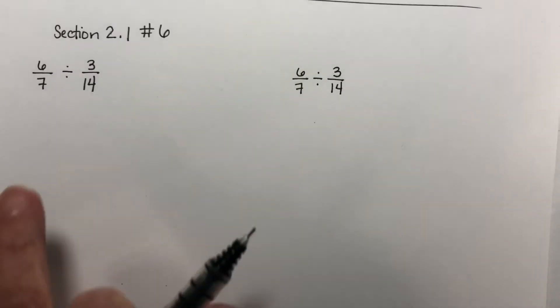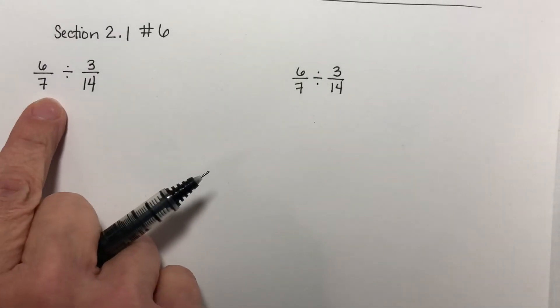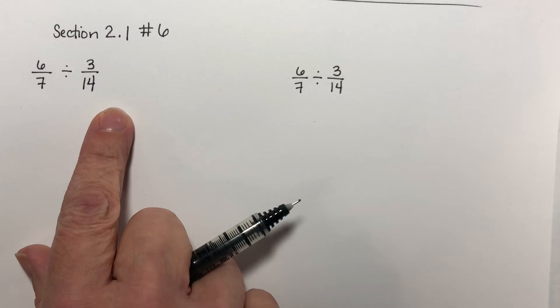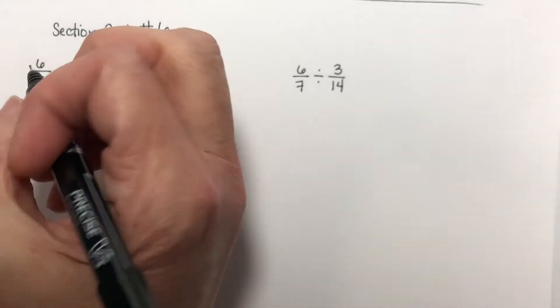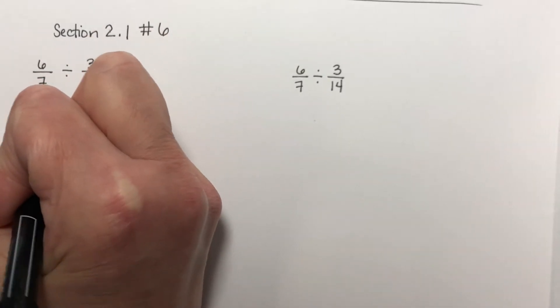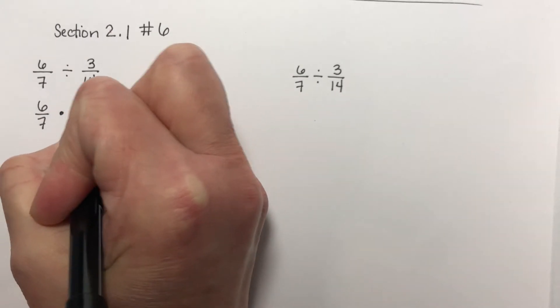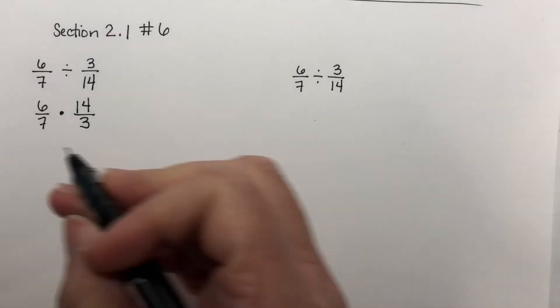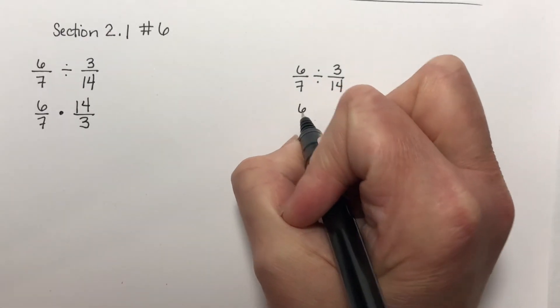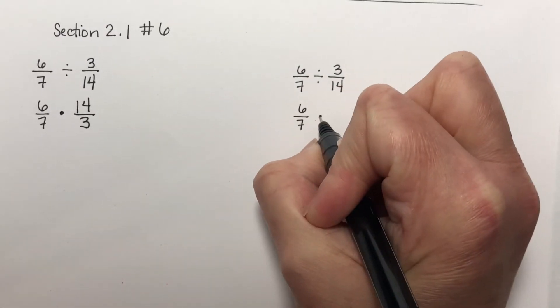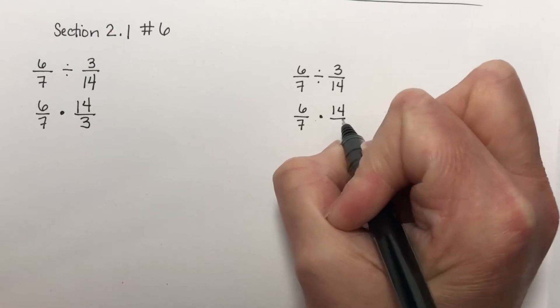The problem that it gave me is 6 over 7 divided by 3 over 14. Now the rule for dividing fractions is you keep the first one, change it to multiplication, and then flip the second one. And this step is actually going to be the same no matter which approach you take to this, so I'll go ahead and write it twice.